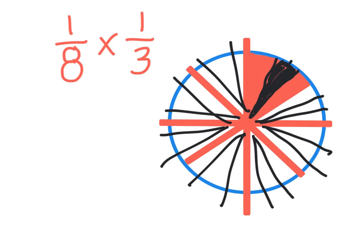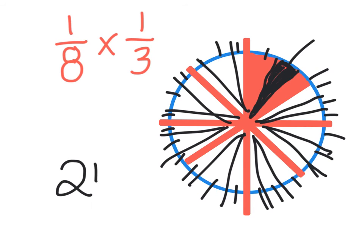So I have 1, 2, 3, 4, 5, 6, 7, 8, 9, 10, 11, 12, 13, 14, 15, 16, 17, 18, 19, 20, 21, 22, 23, 24 total parts. And one of them represents my answer. So 1/24th is my answer when I multiply 1/8th times 1/3rd.